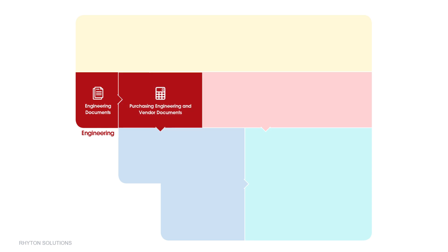Procurement documents are the inputs of the purchasing engineering module, to be a base for preparing purchasing documents such as material takeoffs and material requisitions. It is to be mentioned that the system has a feature to connect to CAD drawings in order to extract MTO directly and use it to create MR, which increases accuracy and speed by reducing human errors. This module controls vendor documents as well, by controlling document flow to or from vendors.